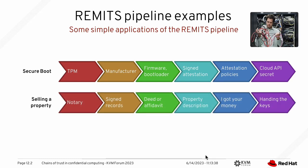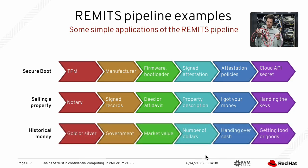When you sell a property, you have the same kind of chain: a notary as root of trust, signed records as endorsements, deeds or affidavits as measurements, a property description as identity, exchanging money as the trust decision, and the key to the new property as the secret. Our whole money system is built the same way — gold or silver as the root, the government as endorser of paper notes, market value as measurement, the number of dollars as identity, handing over cash as the transaction, and receiving goods as the released secret.